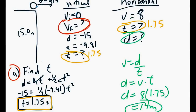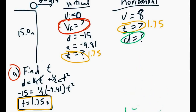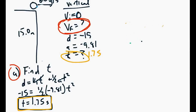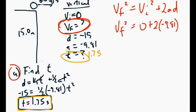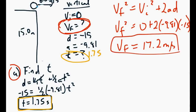The only other thing left to solve for is the final velocity of the object when it hits the ground. Going back to our vertical information, we can solve for final velocity using the formula vf² = vi² + 2·a·d. Since initial velocity is zero, we have vf² = 2 × 9.81 × (−15). Taking the square root gives approximately 17.2 meters per second. So the final vertical velocity is negative 17.2 m/s, since it's pointing straight down.